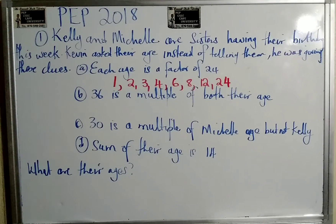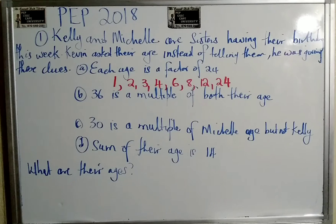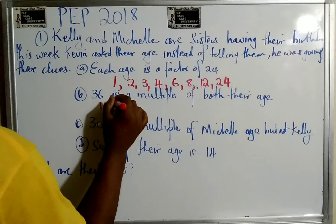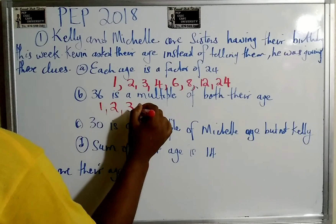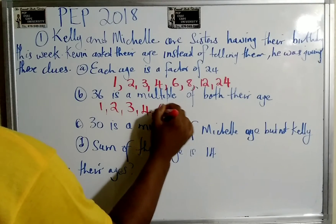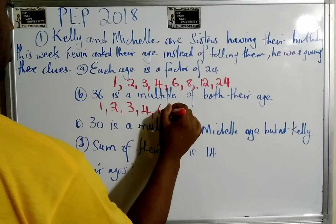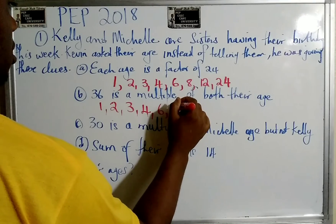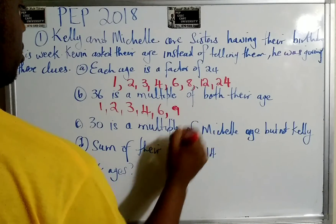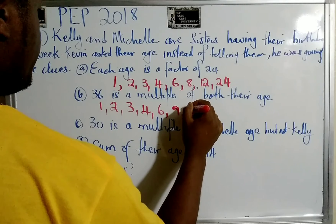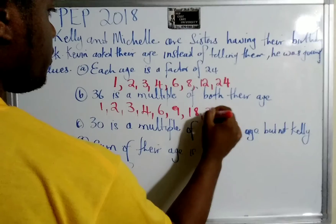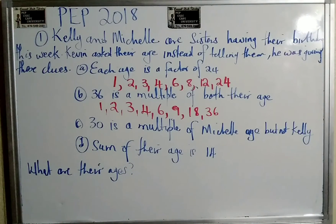It says 36 is a multiple of both their ages. A multiple means when you multiply you can get that number — for example, 2 multiplied by 18 gives you 36, so 36 is a multiple of 2. The factors of 36 include: 1, 2, 3, 4, 6. We can consider these numbers.